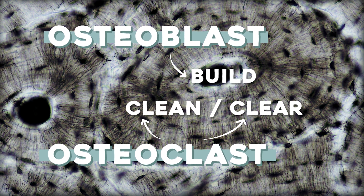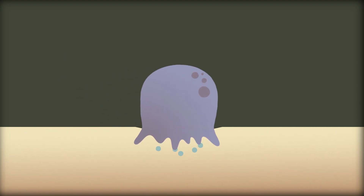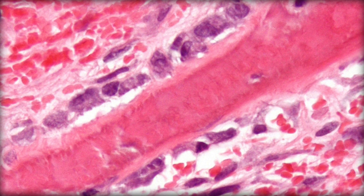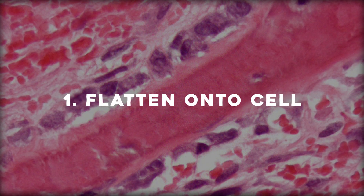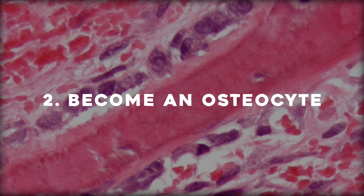Bone remodeling starts with the resorption phase, when osteoclasts start pumping out enzymes and hydrogen ions to dissolve the extracellular matrix of the bone, which is mostly collagen and calcium. Now that we've got little scooped-out divots, cells around that area secrete growth factors that signal osteoblasts to begin building. They deposit a bunch of collagen and minerals and then do one of three things: flatten out and line the surface of the bone, become an osteocyte, or undergo apoptosis and die. If it does become an osteocyte, it's now responsible for conducting this process and turning bone remodeling up or down.